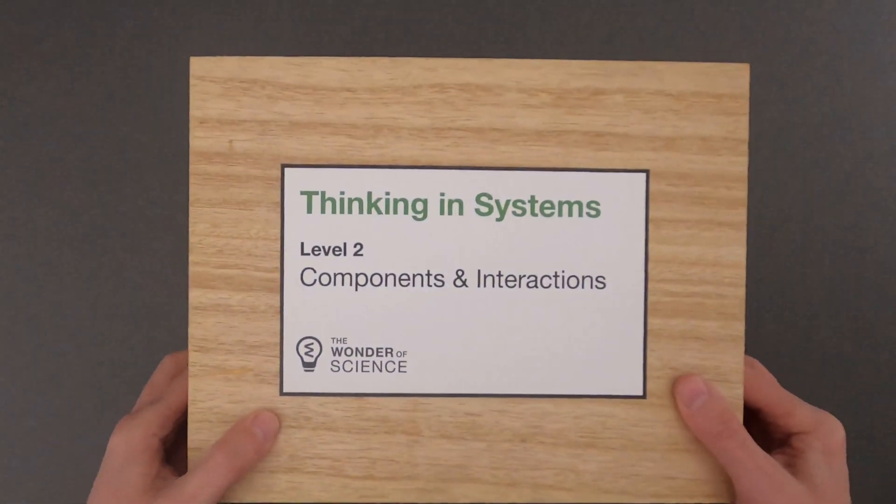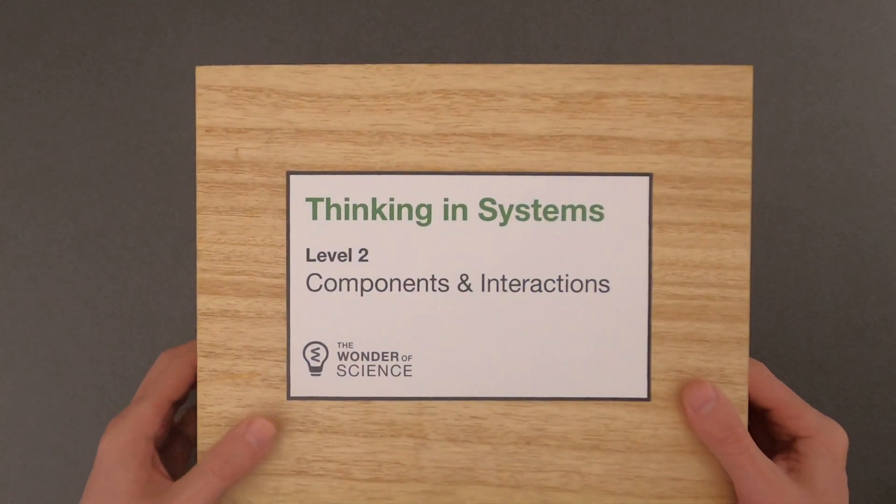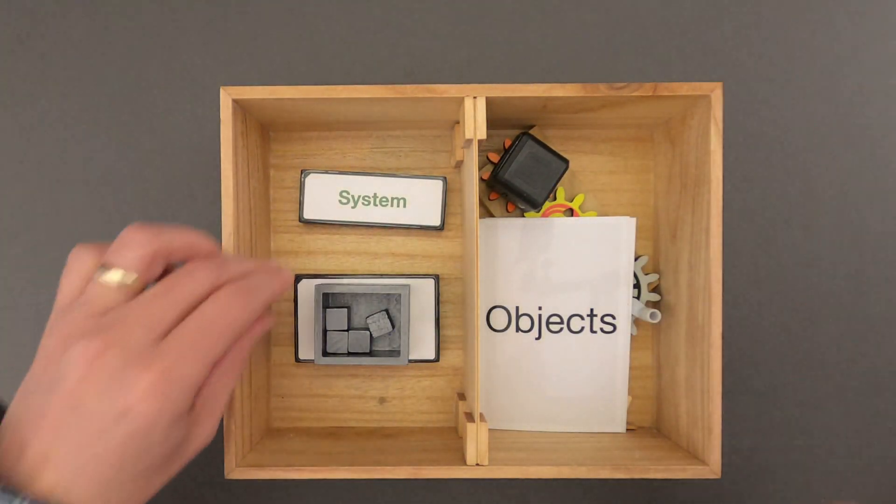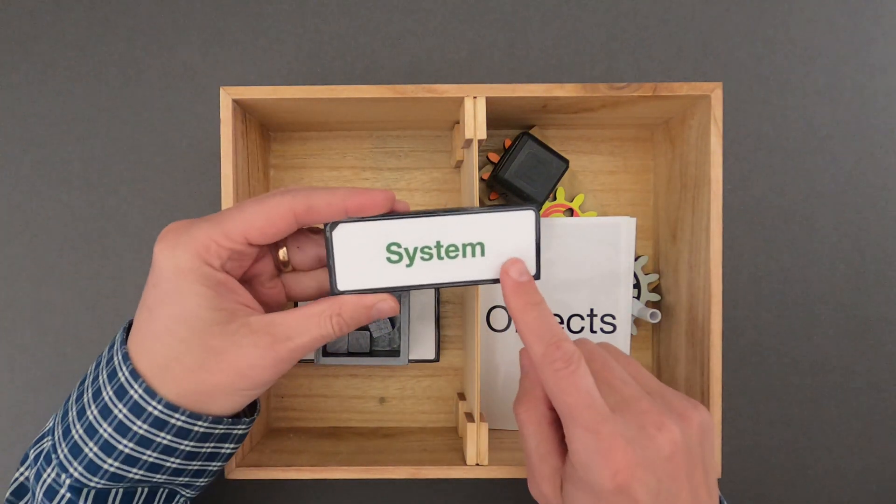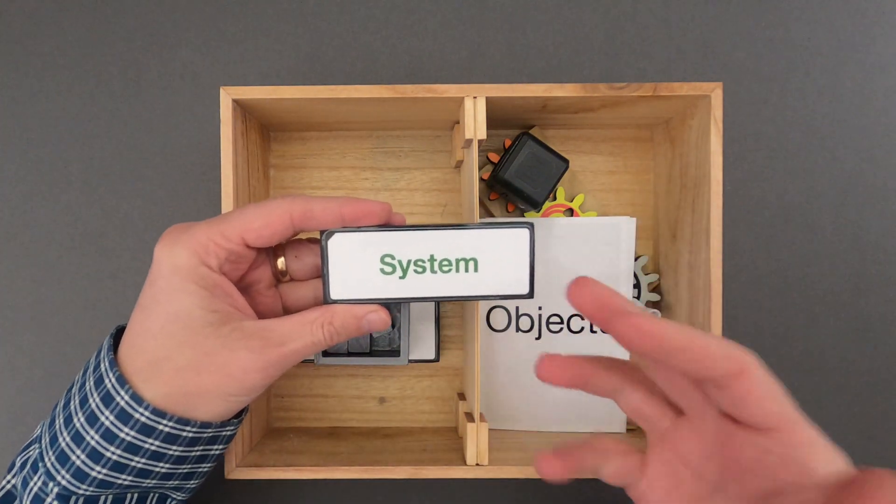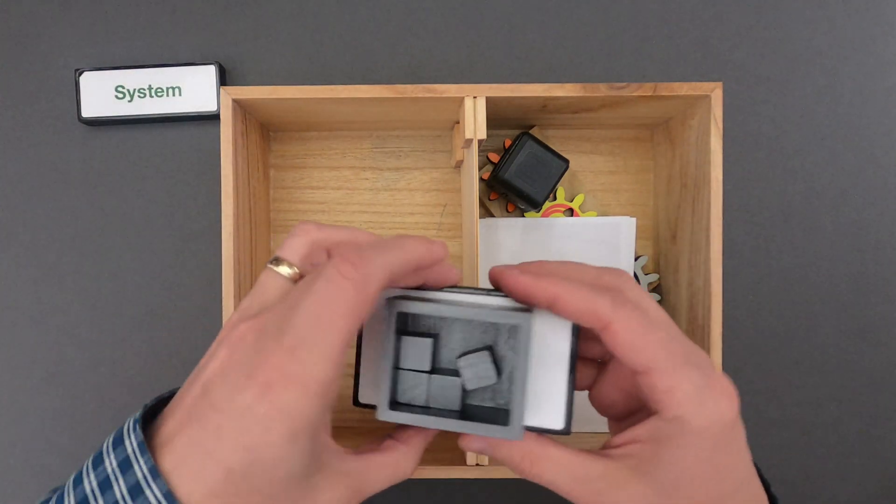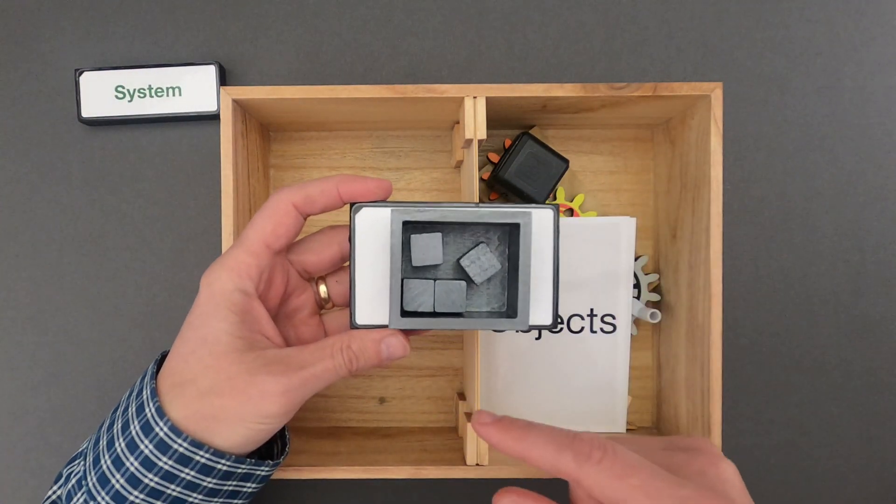Hi, it's Mr. Andersen and this is Thinking in Systems Level 2, on components and interactions. As we define and investigate the system, it will be represented on that whiteboard. But we should always define what the system is that we're going to study, be it an ecosystem, a chemical system, or a physical system. This object will represent the system.